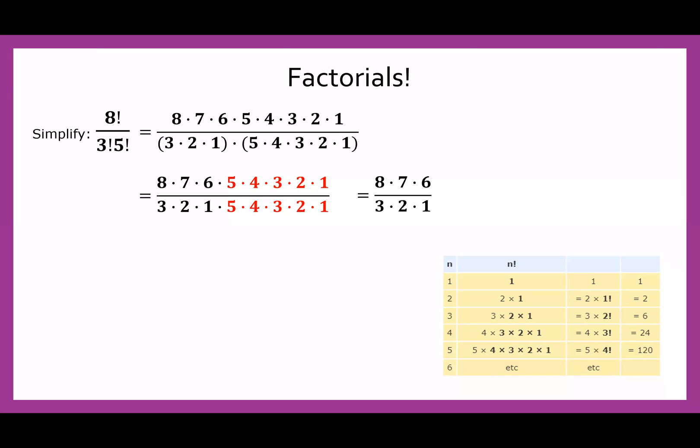And we can go ahead and simplify this further. Notice that the three and two in the denominator form a six. And we also have a six in the numerator. So those will cancel out and we'll be left with eight by seven over one, giving us 56.